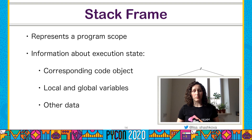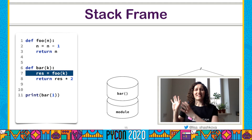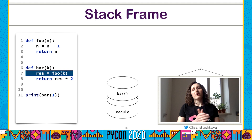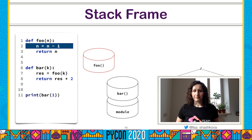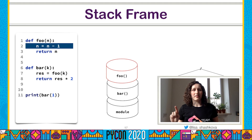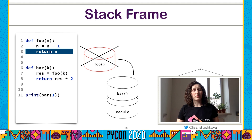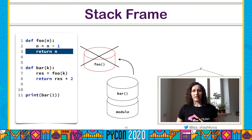A stack frame object represents a program scope in Python. It contains information about current execution state like the code object, local and global variables, and a lot of other data. Frames are stored in a stack-like structure. The bottom-most frame, sometimes called a module frame, represents the module from which execution was started. When Python interpreter enters a new scope, it creates a new frame object and puts it on top of the stack. When execution leaves the scope — for example, returns from a function — the interpreter removes the frame from the top and passes data to the previous frame.